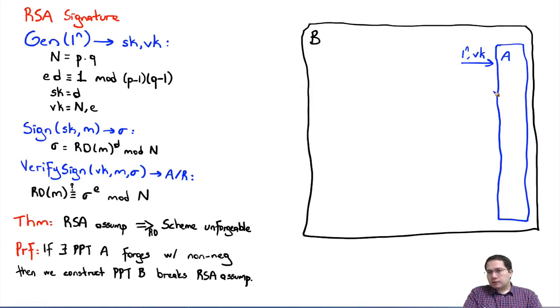Then at any point A can ask for a signature on some message m_i. We need to give back the corresponding sigma_i. And finally, A is going to output some message and sigma. Remember, this message needs to be different from all the query messages. Since this is a proof in the random oracle model, in addition to these, at any time during this interaction, again,